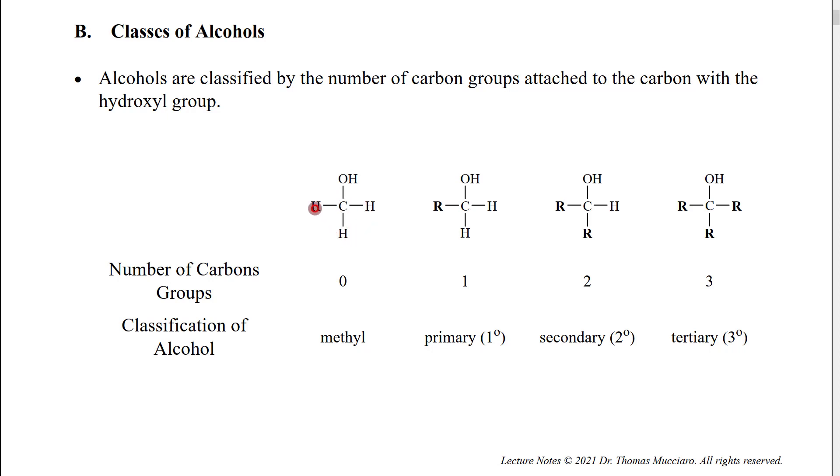We then count how many carbon groups are there directly attached to that alcohol carbon. If there's no carbon groups attached to it, then we say it is a methyl alcohol. Technically there's only one of those. If there's one carbon group, which would put this alcohol carbon at the end of the longest carbon chain, we would call that a primary alcohol. If there's two carbon groups, we call it a secondary alcohol. And if there are three carbon groups, it would be a tertiary alcohol.